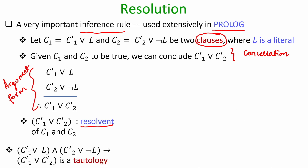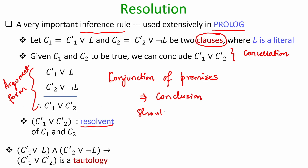To apply the resolution rule, C1 and C2 must be clauses — compound propositions available in clause form, not in a different form. As per our definition of valid argument form, the conjunction of premises implies conclusion should be a tautology. Since we are saying resolution is a valid inference rule, the conjunction of clause C1 and C2 — where L appears positive in C1 and negative in C2 — implies C1 prime disjunction C2 prime is a tautology. We will prove that very soon.